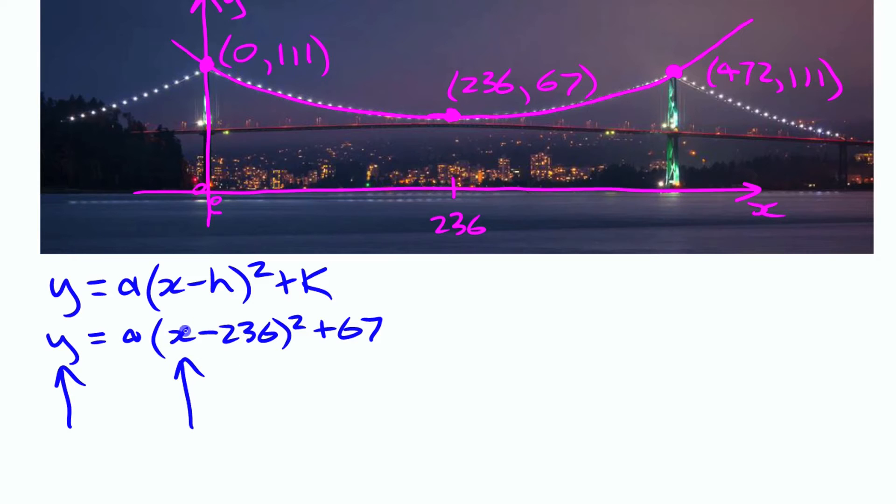Now I could choose either point—I could choose that point or that point. It actually won't make a difference. I'm going to choose that point because it makes it slightly simpler to work with, where one of the numbers is zero. So we're going to substitute in here: 111 for y and 0 for x, and everything else is going to stay the same here.